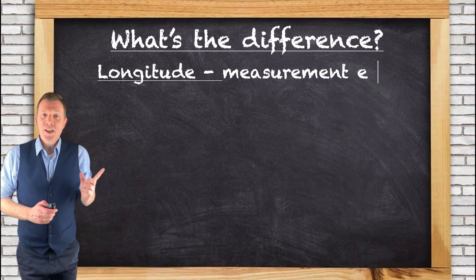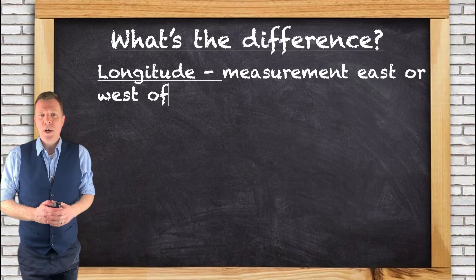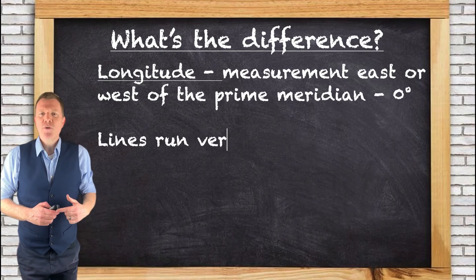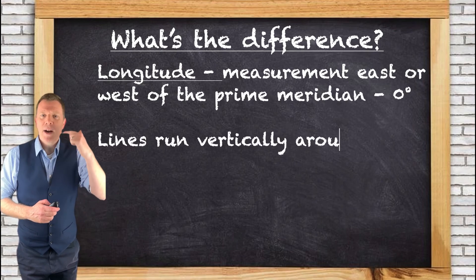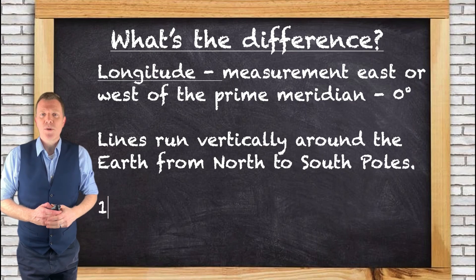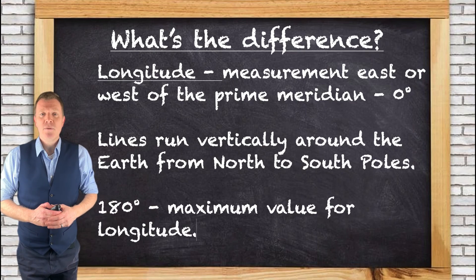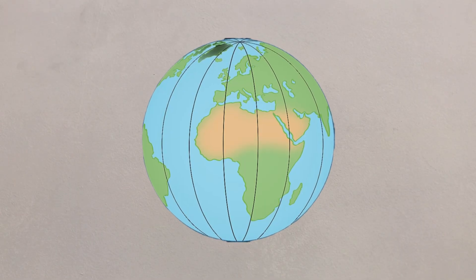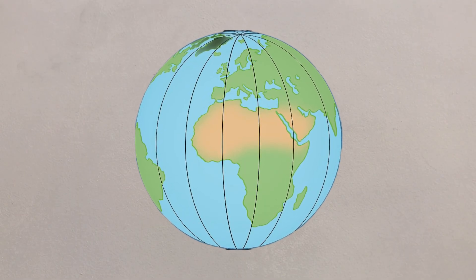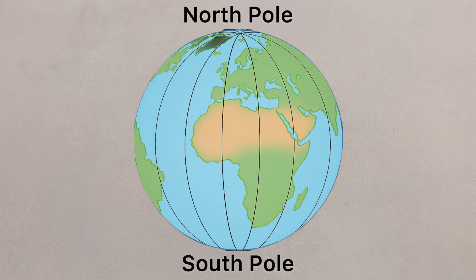Longitude is the measurement east or west of the prime meridian, which is at 0 degrees. It's measured by imaginary lines that run around the Earth vertically and meet at the north and south poles, with 180 degrees being the maximum value for longitude. Unlike lines of latitude, lines of longitude are the same length, and they all meet at the north and south poles.